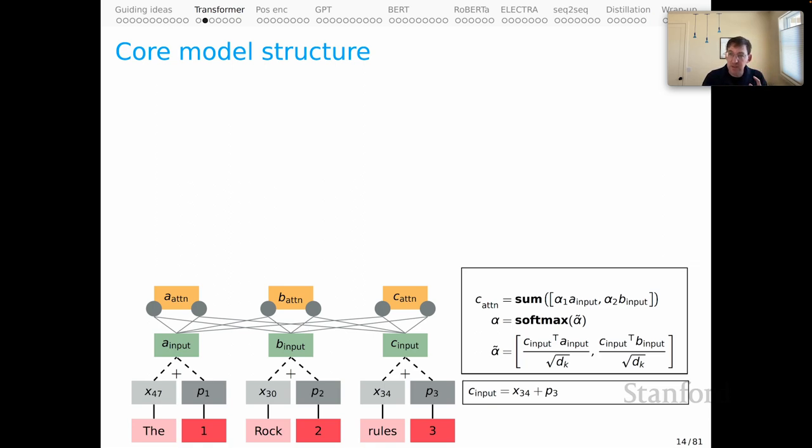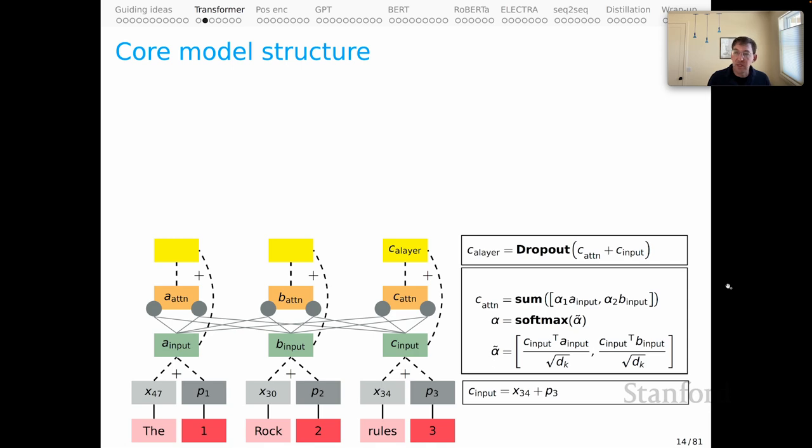Now, I do think that the representations that I have in orange here are attention representations, but they're kind of raw materials because they're really just recording the similarity between our target representation and the representations around it. To get an actual attention representation in the transformer, what we do is add together these contextual representations down here with these attention values. And that gives us the representations in yellow, CA layer. And those are kind of full-fledged attention based representations.